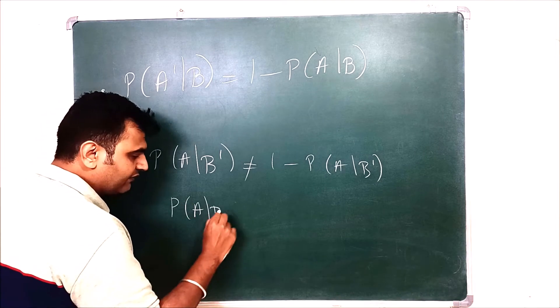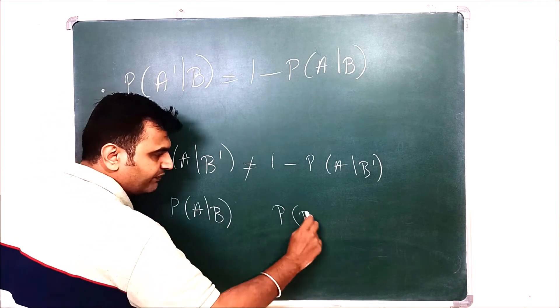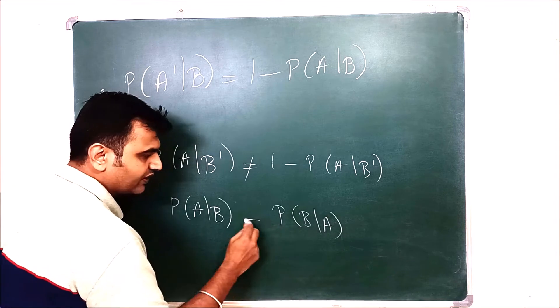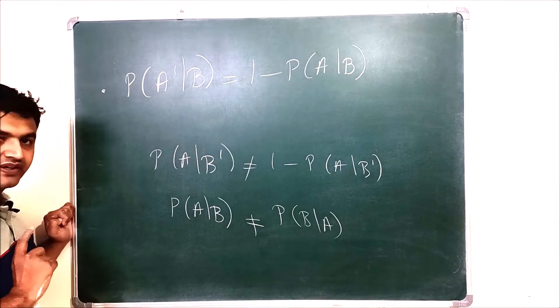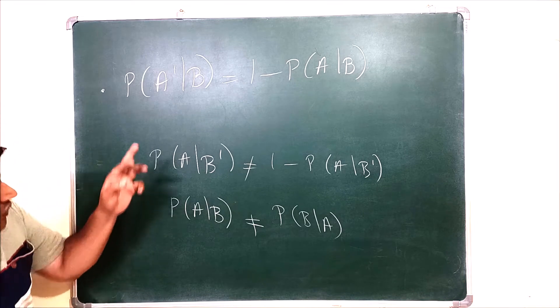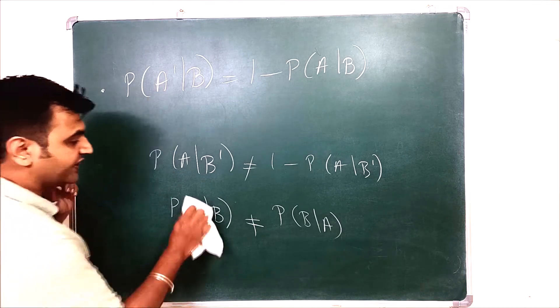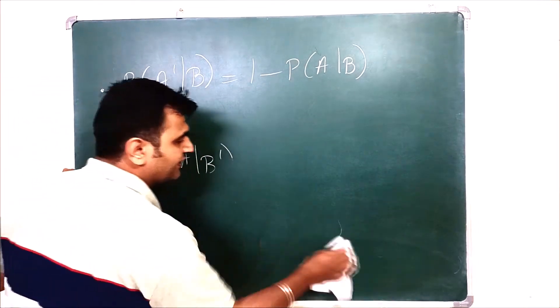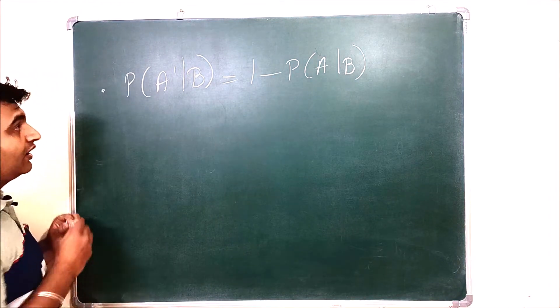Also probability of A given B and probability of B given A, they are not equal. So if you interchange the role of A and B, they are not same. But for the first component, the conditional probability behaves really very well.